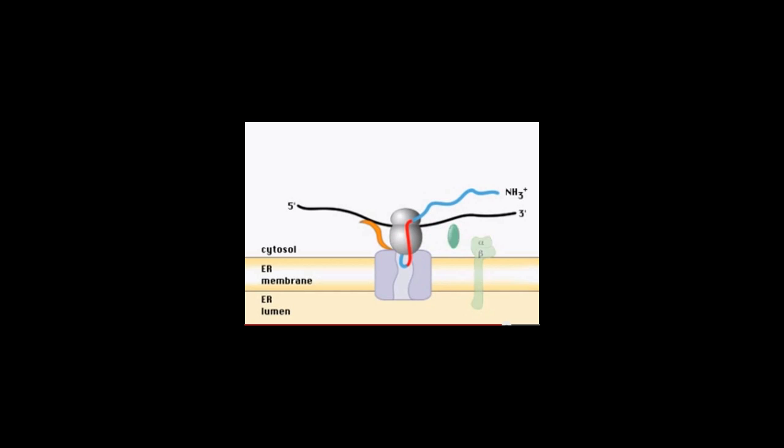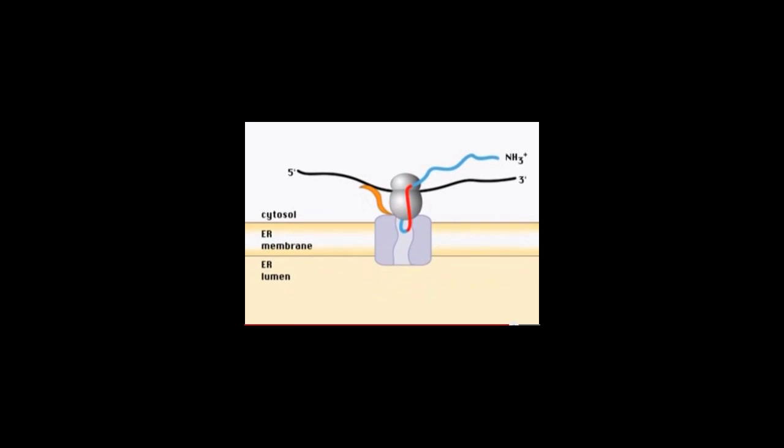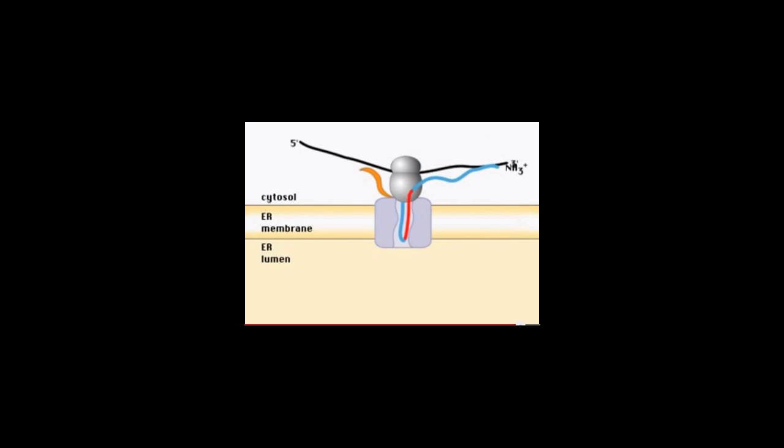Here the N-terminus is in the cytosol, as you can see, and as the protein continues to be made, that sequence of internal signal sequence remains in the Sec61, and that is the part that actually becomes the transmembrane domain.